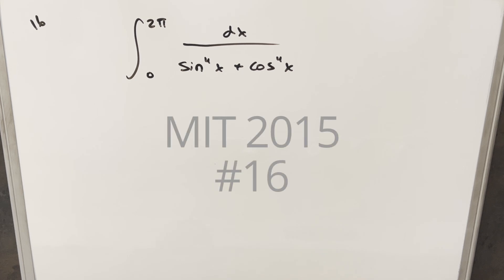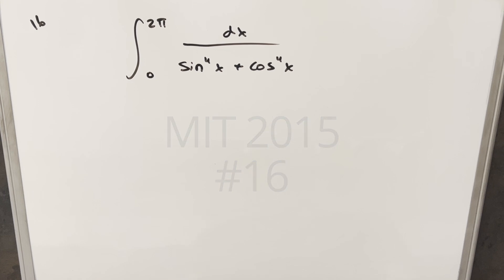Today we have a really interesting integral from the MIT Integration Bee from 2015, number 16. We have the integral from 0 to 2π of 1 over sin⁴x + cos⁴x dx. Really interesting integral here today.